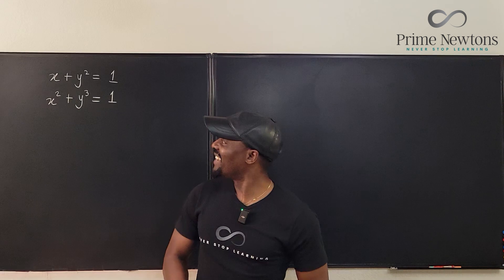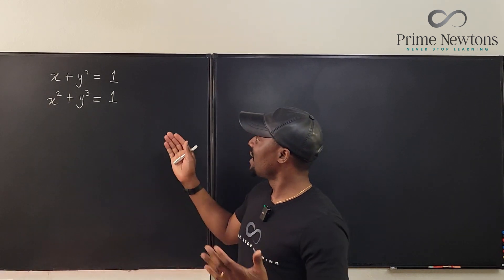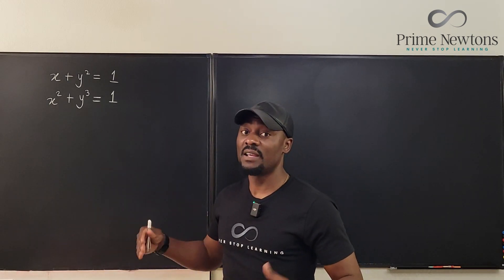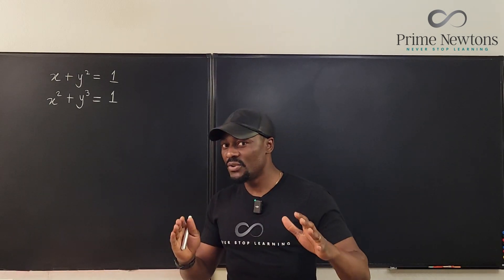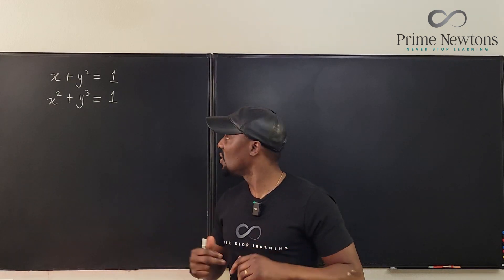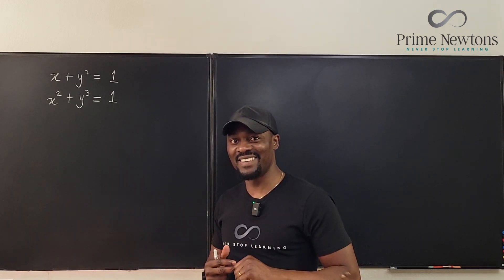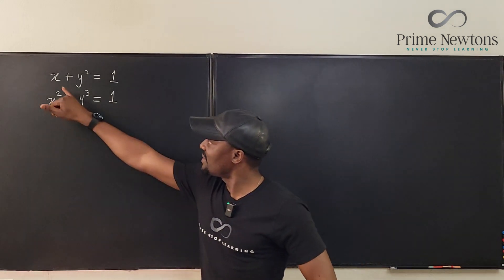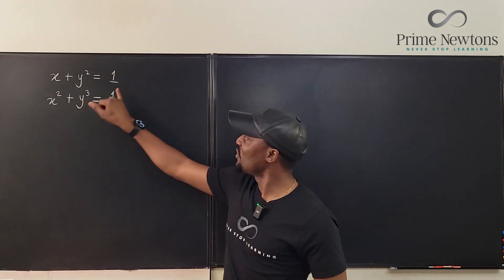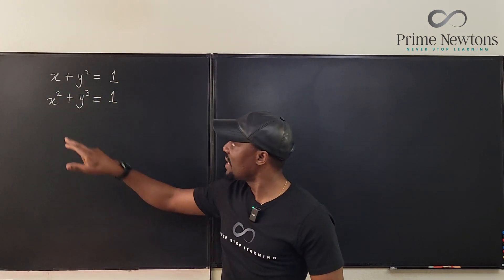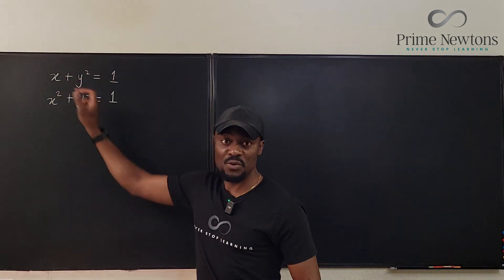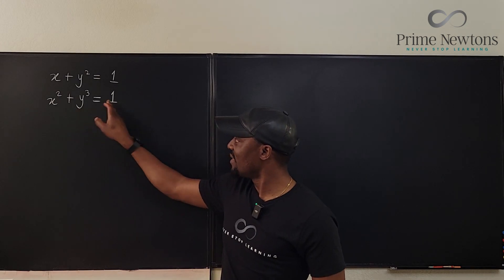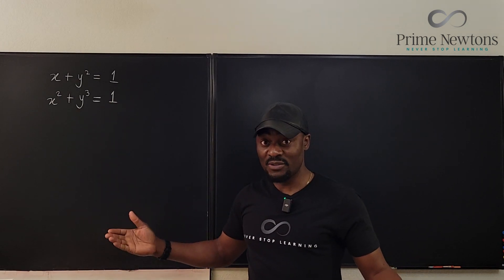Welcome to another video. The mission is to find all values of x and y — all pairs of x and y — that would satisfy this system of equations, using my favorite method of solving this kind of problem: guessing. By inspection, if x is one then y has to be zero so the first equation equals one. This is also true for the second equation, so we already found one solution.